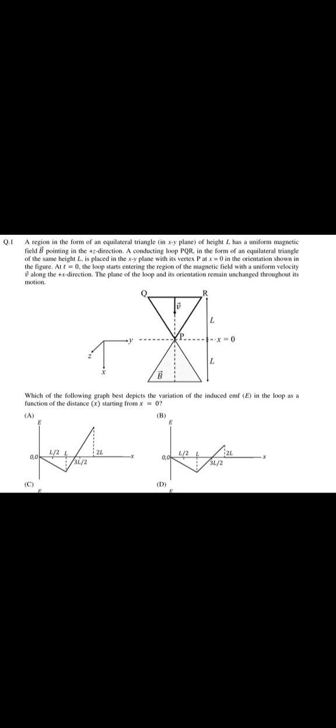Now initially the value of X is 0 and finally the value of X is 2L. So at X equals 0, the net change for the flux is 0, and at X equals 2L when the loop has completely passed through the triangular region, again 0.